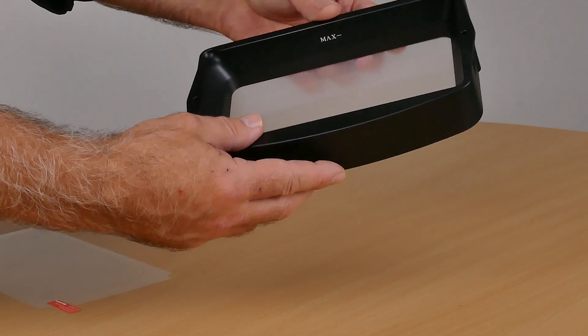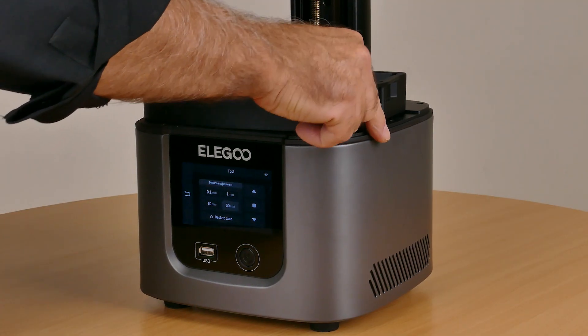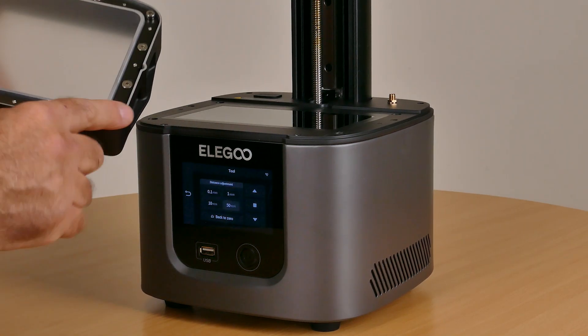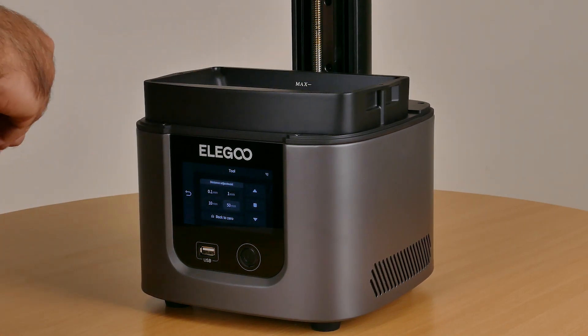The vat can only be placed in one way. There are four bolts at the bottom and they lock into some points on the machine. Once it pops into there, just a couple bolts and that locks it down.